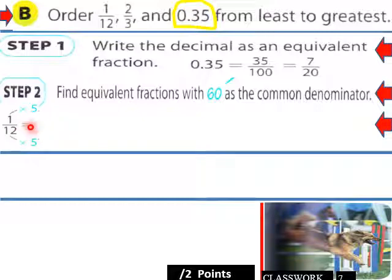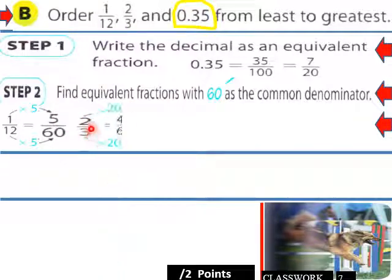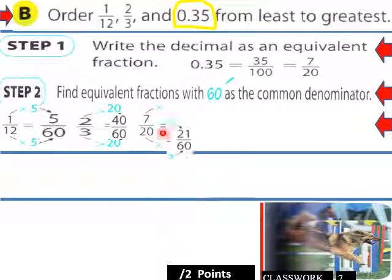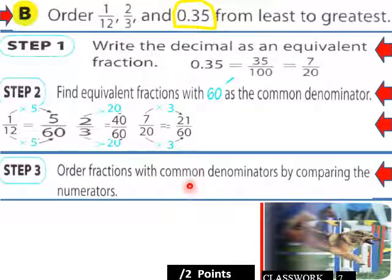Whatever we do to the denominator we must do to the numerator, so 1/12 becomes 5 over 60. For 2/3, multiply by 20 to get a denominator of 60, giving us 40 over 60 — which reduces back to 2/3 to verify. For 7/20, multiply numerator and denominator by 3, giving 21 over 60.